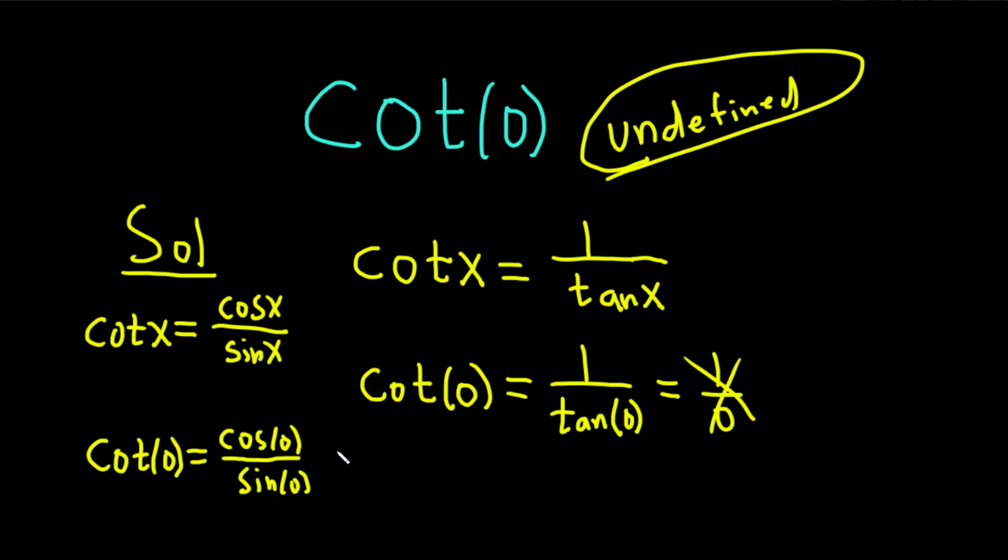But cosine of 0 is 1, and sine of 0 is 0. Game over. Also undefined. So no matter which way you look at it, the answer is undefined.